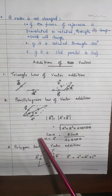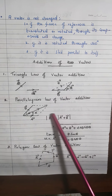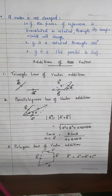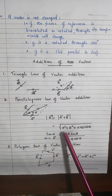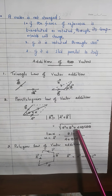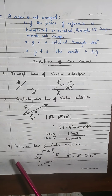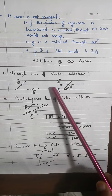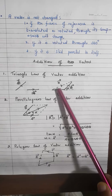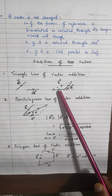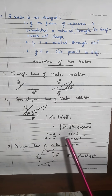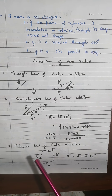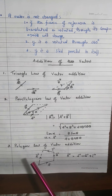To find the resultant, use the formula R = √(A² + B² + 2AB cosθ). The resultant makes an angle α with vector A, given by tan α = B sinθ / (A + B cosθ). Keep these two very important relations in memory.